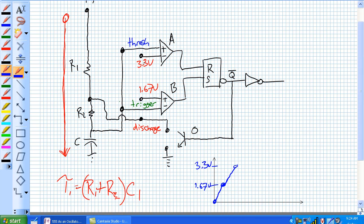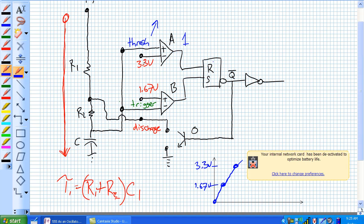But now, it reaches 3.3 volts. At 3.3 volts, threshold becomes greater because it's still continuing to increase than the minus input of comparator A, and this changes to a 1. Now, things start happening. It's resetting the latch, which should put Q to 0.